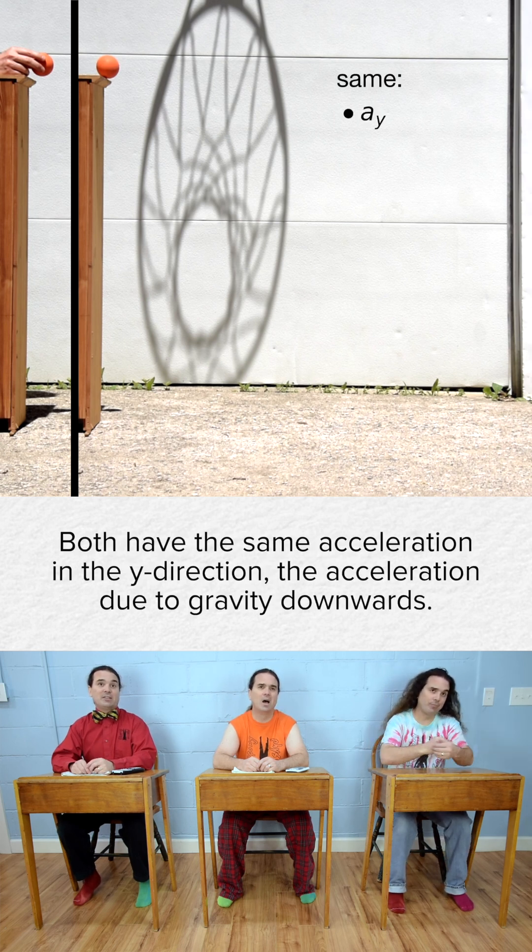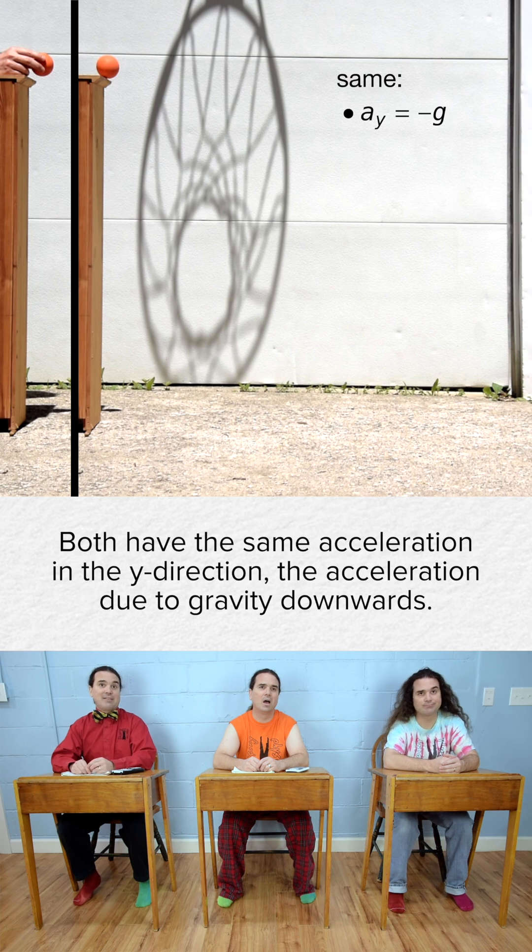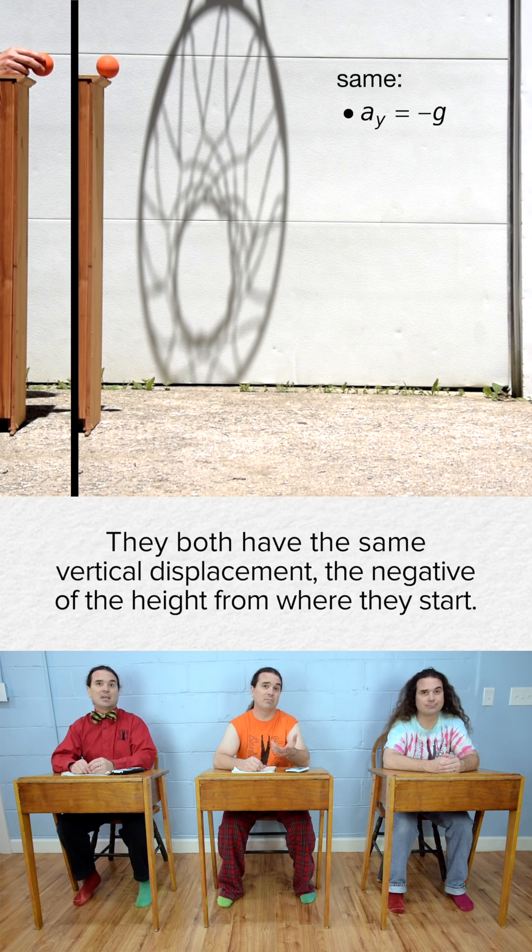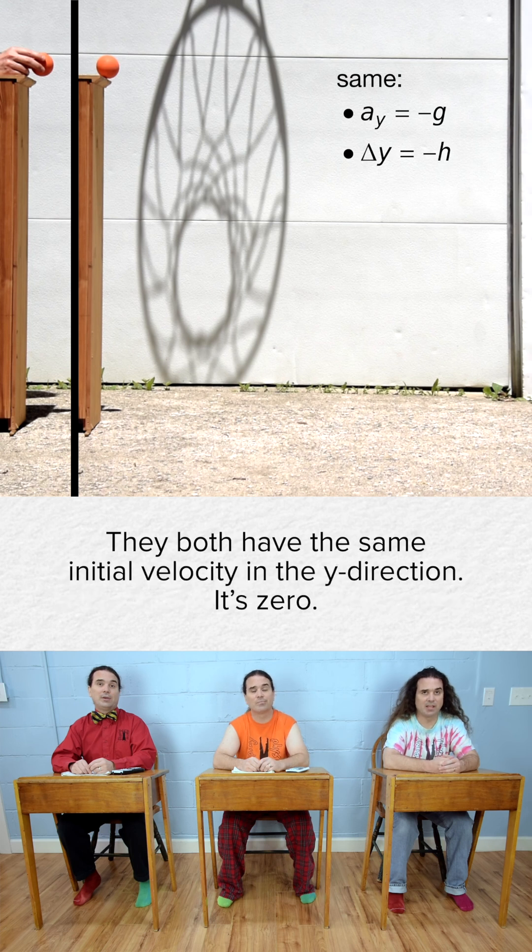Both have the same acceleration in the y direction, the acceleration due to gravity downwards. They both have the same vertical displacement, the negative of the height from where they start. They both have the same initial velocity in the y direction, it's zero.